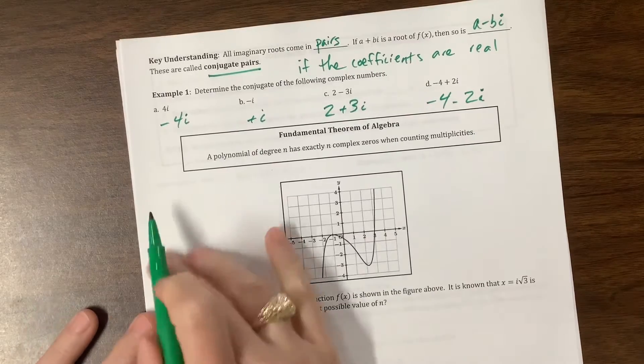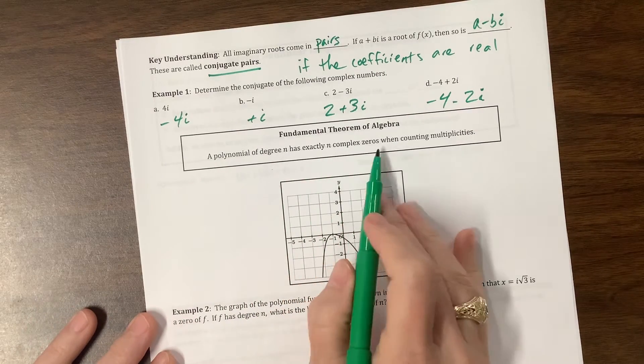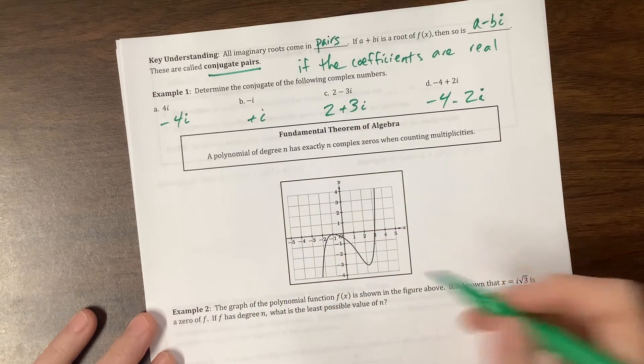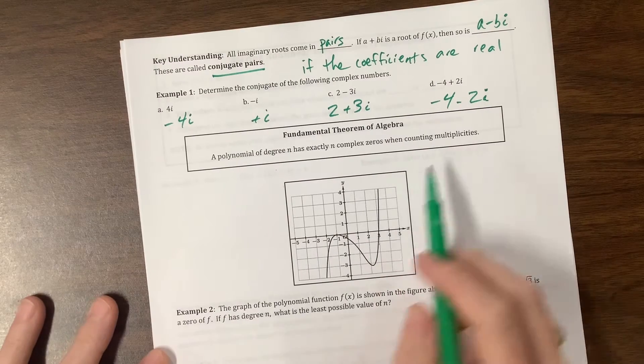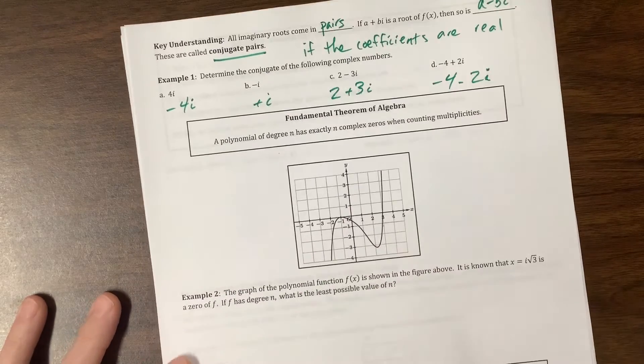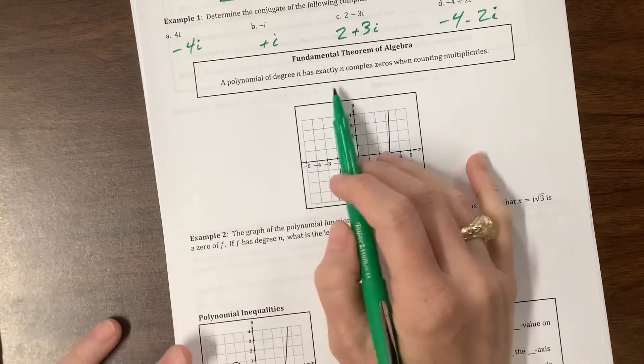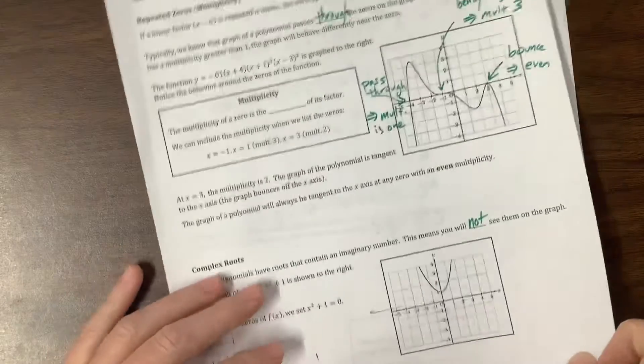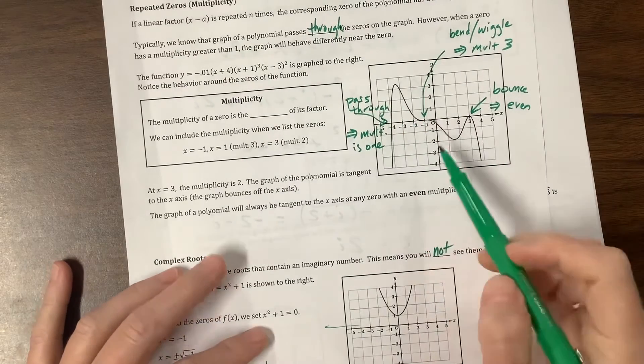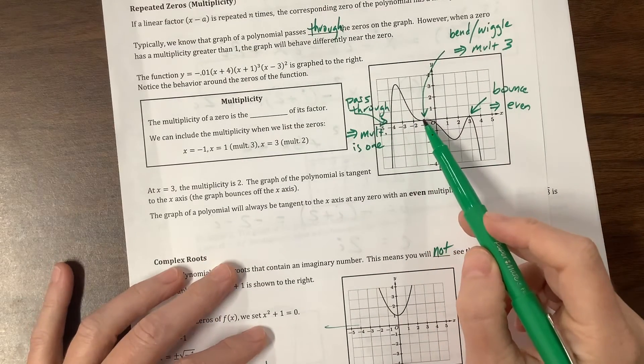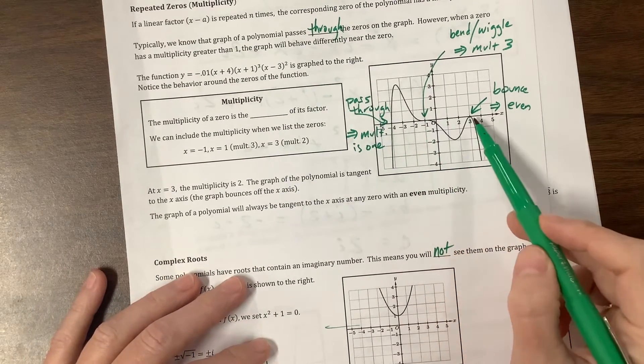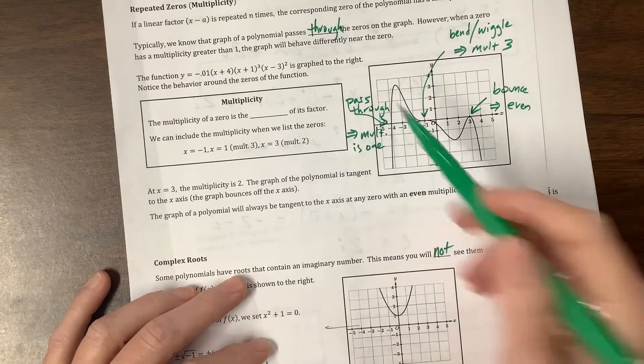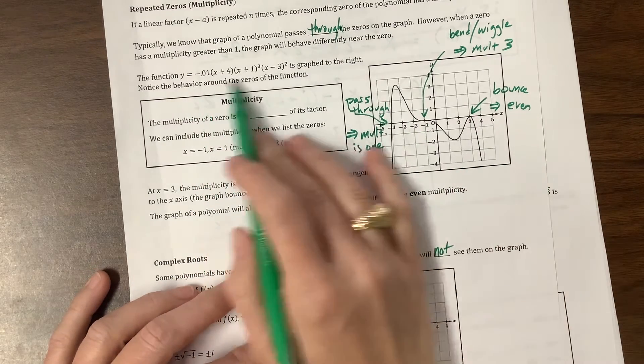A polynomial of degree n has exactly n complex zeros when counting multiplicities. So with something like this, let's look at this one. Exactly n means that if it, like this one over here, could have 1, 2, 3, so 1 plus 3 more is 4 plus 2 more is 6. It could do other weird stuff, but the way they wrote it out, it was degree 6.